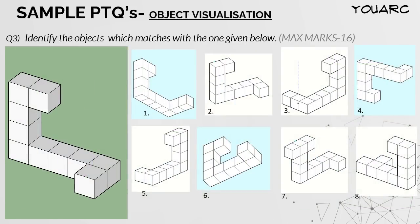The third question is an object visualization type. The approach is the same — try to visualize the image in your mind, rotate it, and see if it matches the options. Initially it might be tricky, so try looking from different directions and twist it around. You can also use the method of elimination: count elements to see if they match the original image. Pause the video — there are four right answers to this question.